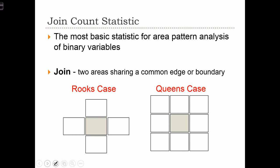In order to do the join count statistic, we have to define something called a join. A join occurs when two areas on our map, two polygons, or if we're dealing with grids, two grid cells, have a common edge or boundary.